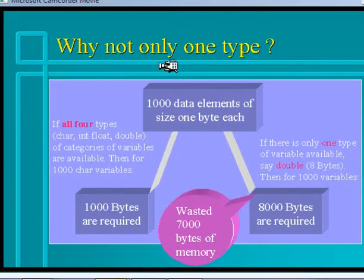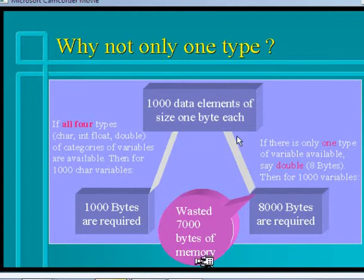I will answer a second question: why not only one type of variable? Assume that there is only one type of variable which can accommodate all types of data — say, double type of variable. So there is only one type of variable, namely double, and we know that a double variable consumes 8 bytes.